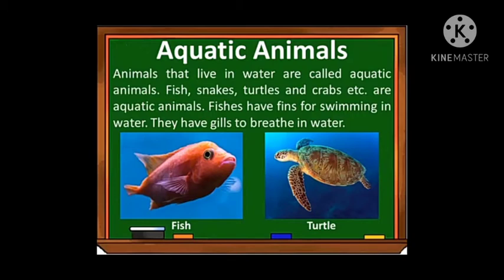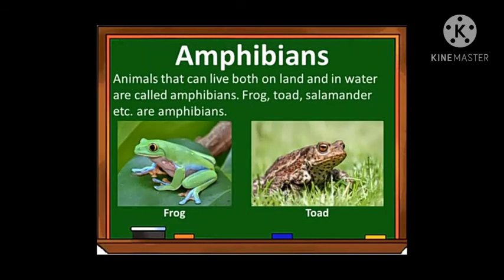The next type is aquatic animals. Animals that live in water are called aquatic animals — for example, fish, snakes, turtles, and crabs. Fish have fins for swimming in water and gills to breathe in water. The main adaptations of aquatic animals are fins for swimming and gills for breathing.